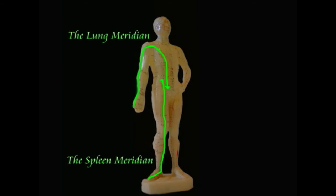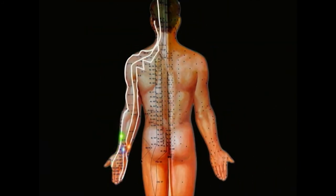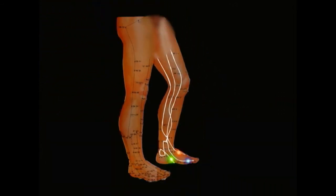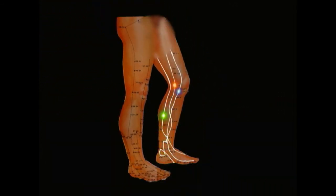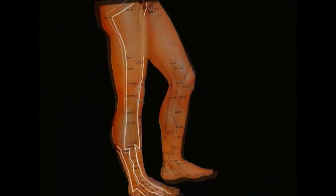we can also divide the 12 meridians into 6 hand-related meridians and 6 foot-related meridians. Thus, we have 3 hand-related yin meridians, 3 hand-related yang meridians, 3 foot-related yin meridians, and 3 foot-related yang meridians.